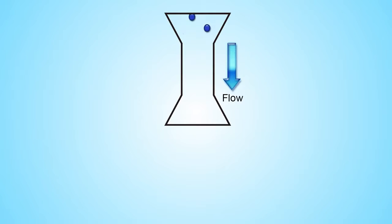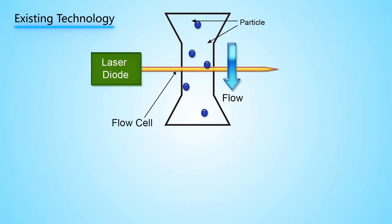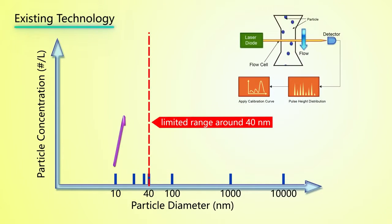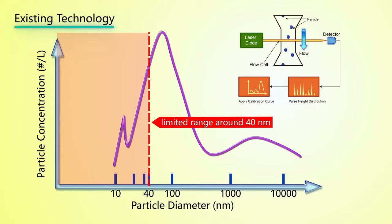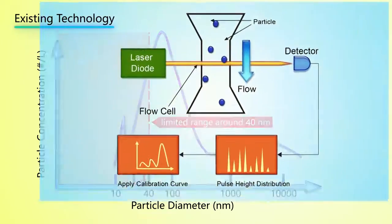Currently, semiconductor plants rely on optical methods for measuring chemical solutions with a limited range around 40 nanometers, which does not always meet the requirements of advanced manufacturing processes. The method also fails to solve the interference problems caused by micro and nano bubbles in solutions.